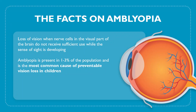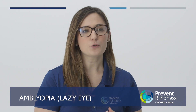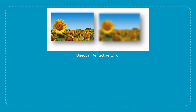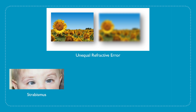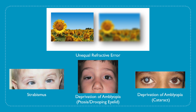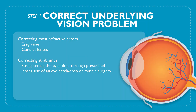Amblyopia is present in about 1-3% of the preschool population, but it is our most common cause of preventable vision loss in children. Amblyopia has a few different causes. It can be caused by an uncorrected refractive error where one eye sees a more blurred image compared to the other eye. It can be caused by strabismus, or it can be caused by something blocking the eye, like a cataract that the child was born with. To treat amblyopia, the first thing we need to do is correct the underlying vision problem — whether that is a simple pair of glasses, cataract removal surgery, or muscle surgery for strabismus.